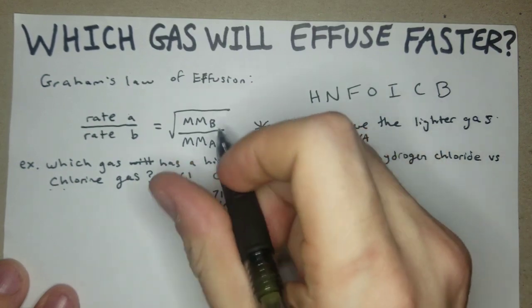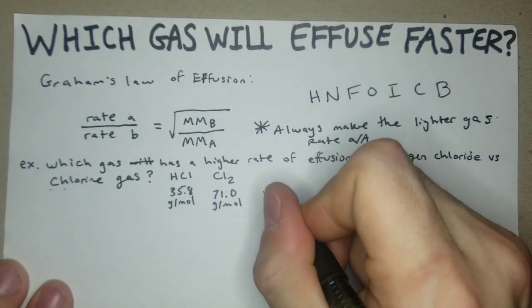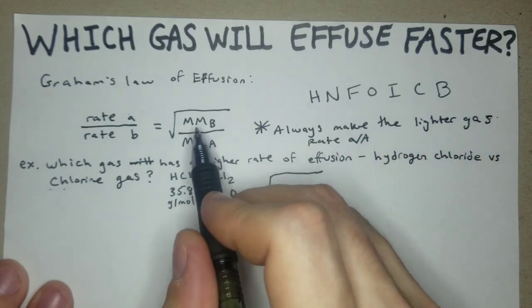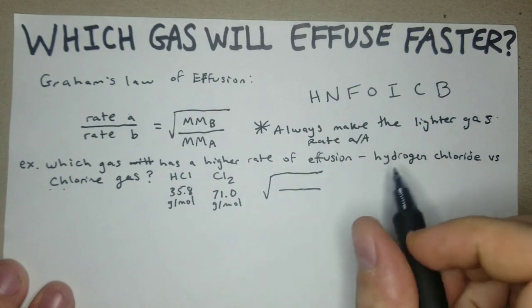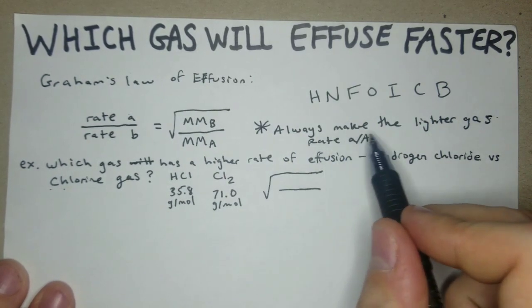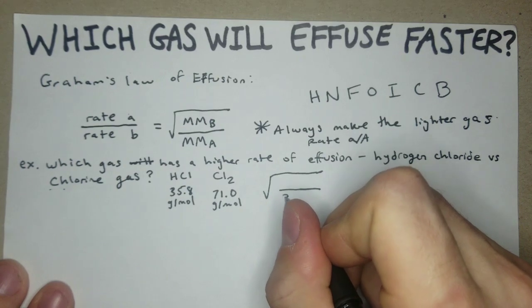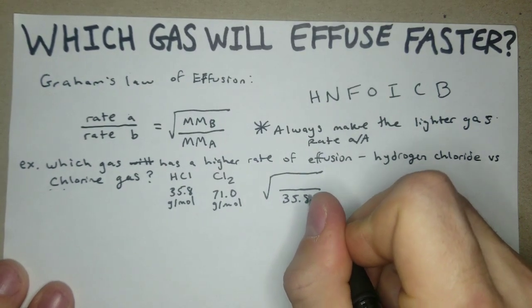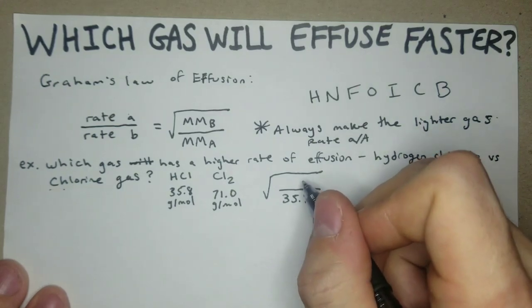Equals the square root, so we're really only concerned with the second half here. We're going to take the square root of the molar mass. We know that a is always the lighter gas which is HCl, so the molar mass is going to be 35.8, and then we have chlorine gas which is heavier, 71.0 grams per mole.